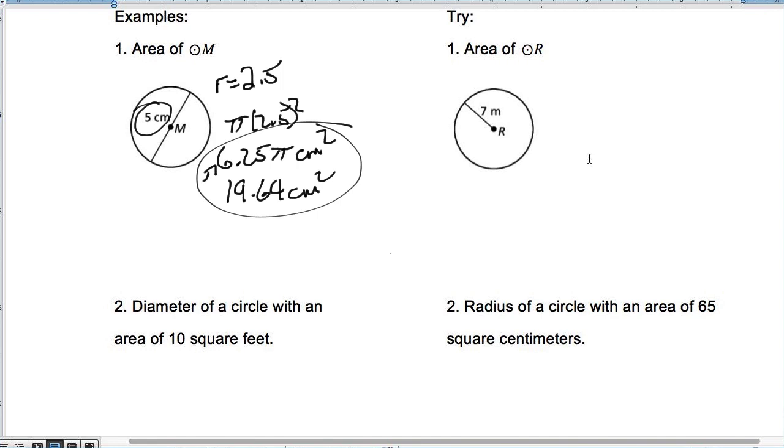All right, let's take a look at number 2. The diameter of a circle with an area of 10 square feet. So I already know my area is 10 feet squared. This equals pi r squared. So I have to divide both sides by pi, right, because we've got to get r squared by itself. So r squared is going to equal, well, what is 10 divided by pi? Well, that comes out to be 3.18.